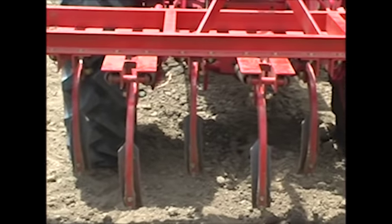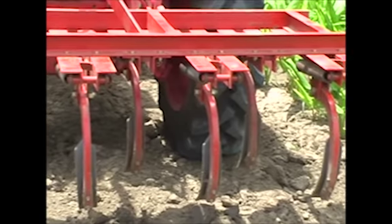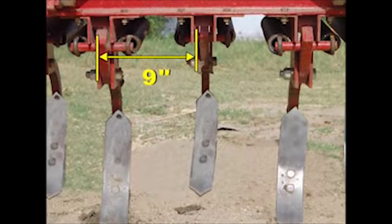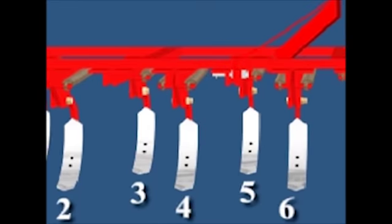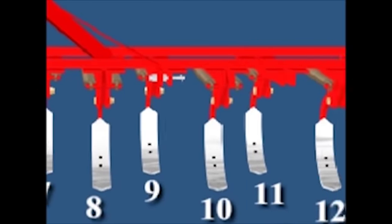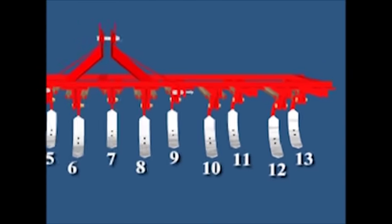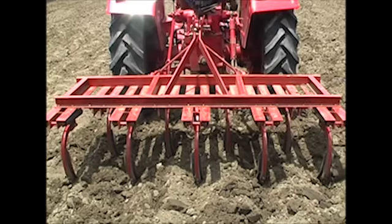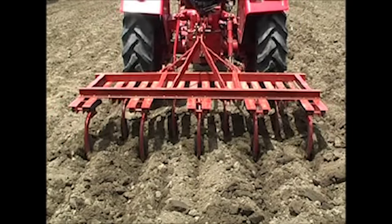The width of the cultivator is obtained by multiplying the number of tines by the spacing between tines. A wider cultivator will cover more area and require a bigger horsepower tractor. The width of the plough is usually more than the track width of the tractor.